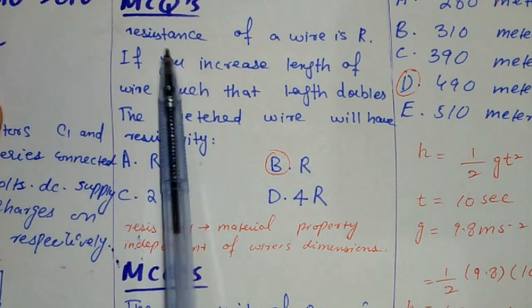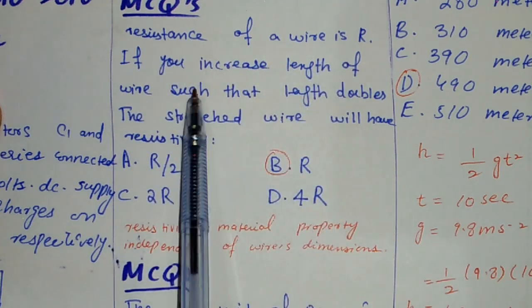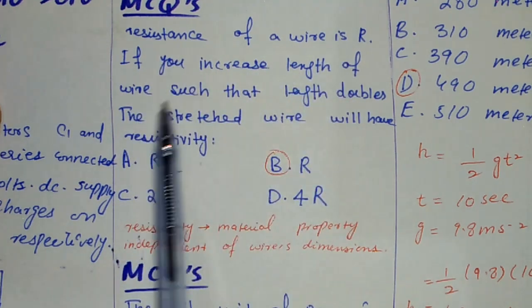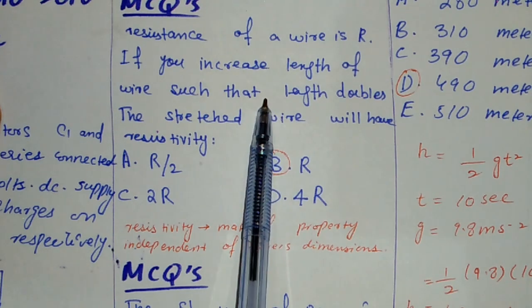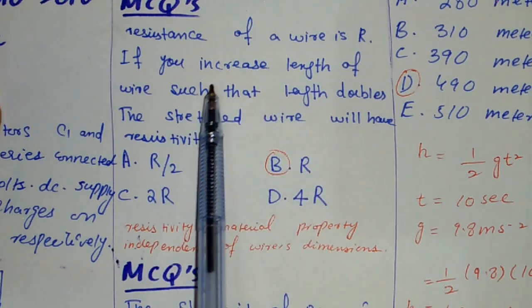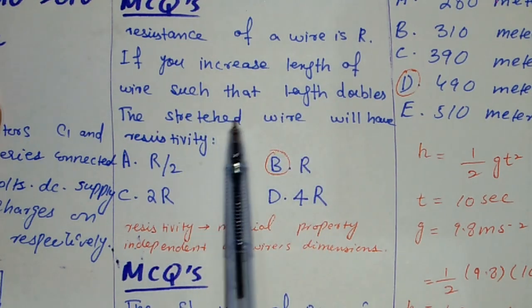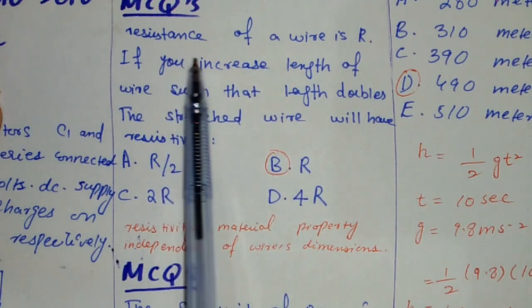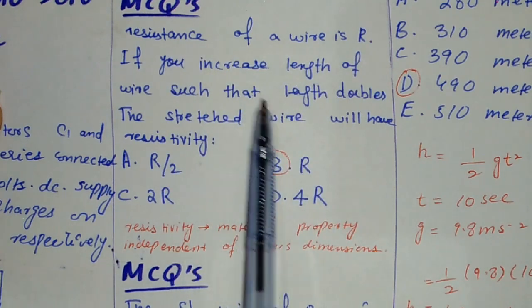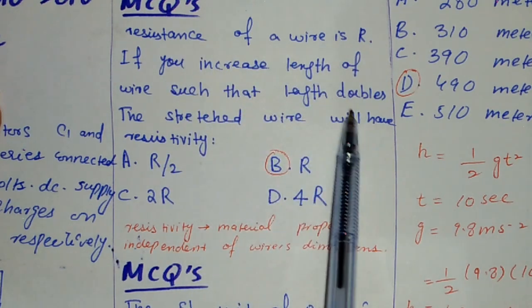Next, the problem says the resistance of a wire is R. If you increase the length of wire such that the length doubles, the stretched wire will have resistivity...